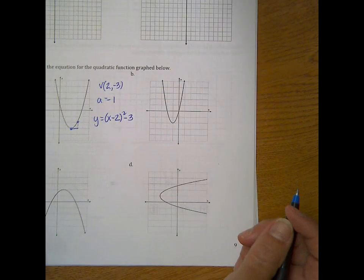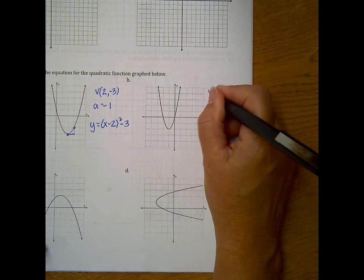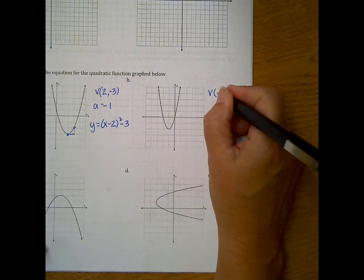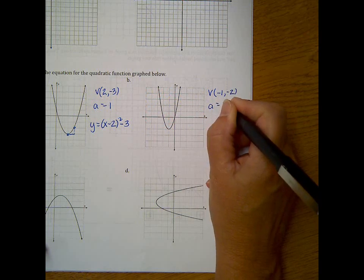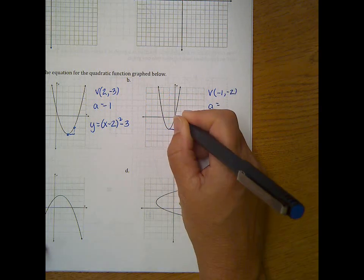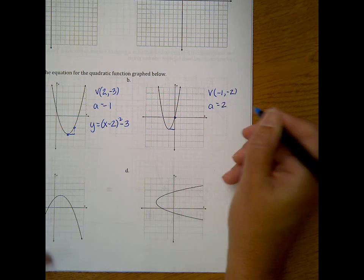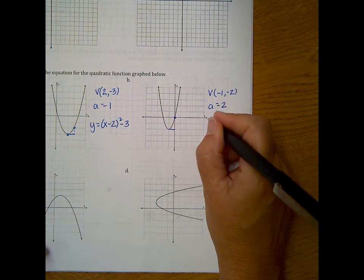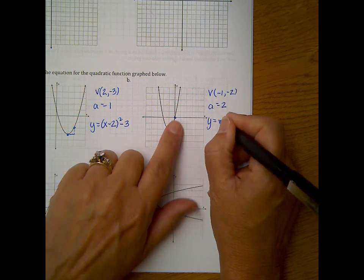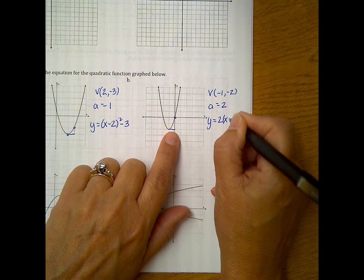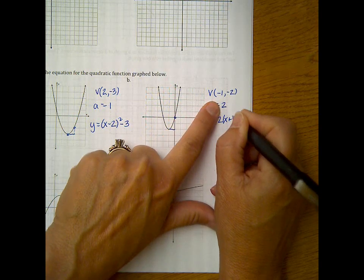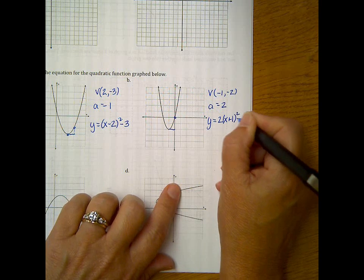Okay, let's look at b. Vertex seems to be at negative 1, negative 2. Our a value is over 1, up 2. So a value is 2. So that would be y equals our a value, 2. This is an x squared parabola, so x, opposite sign, plus 1, squared, minus 2.